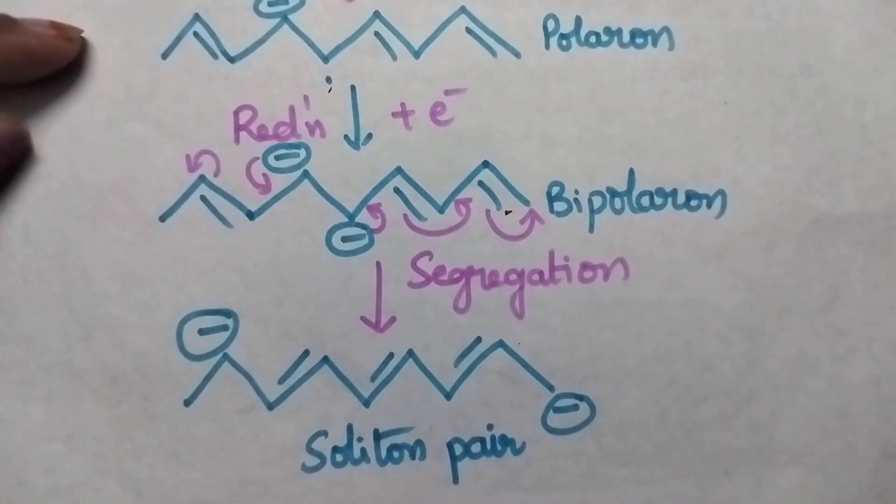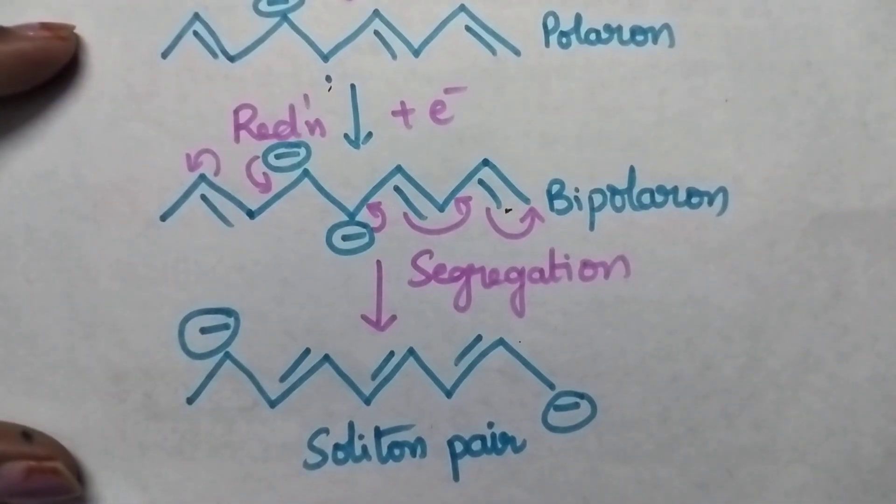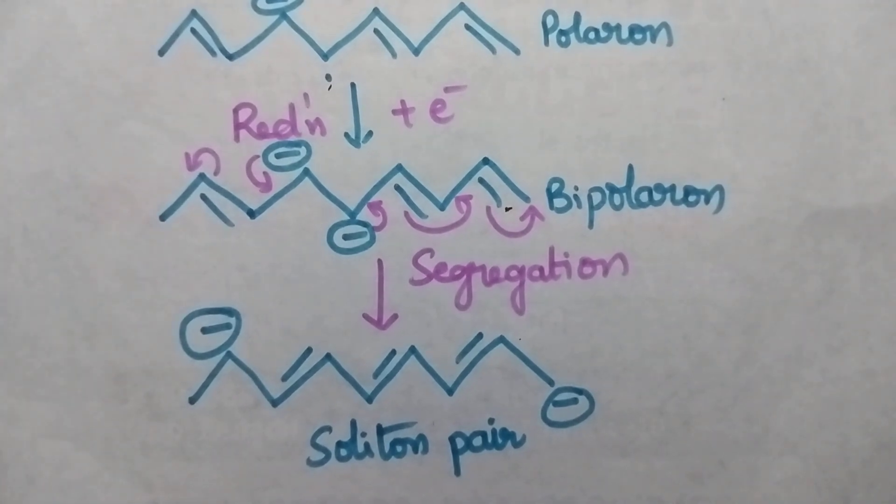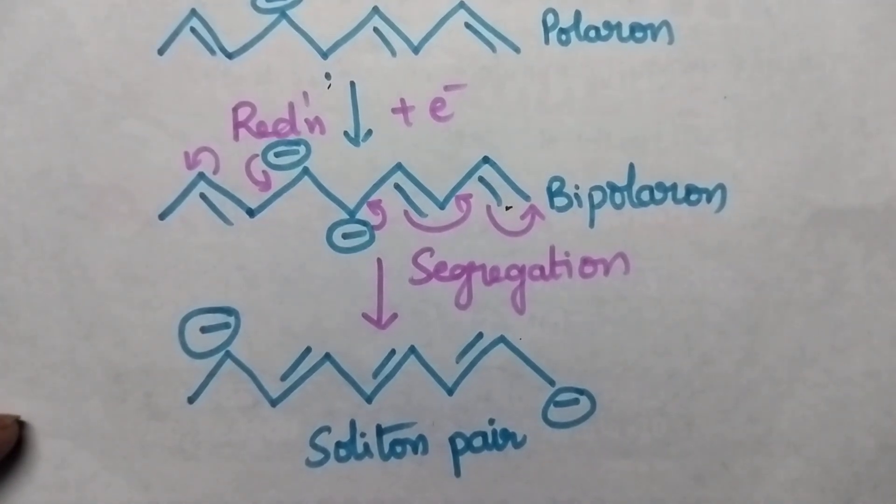In this soliton pair the negative charges are far away from each other and it gives stability to the molecule. In that way here the conductance will be improved.